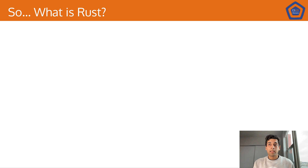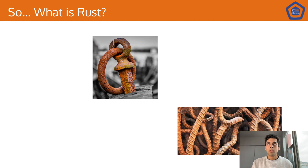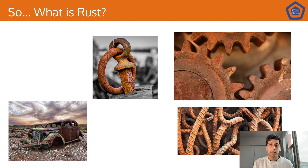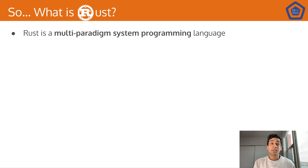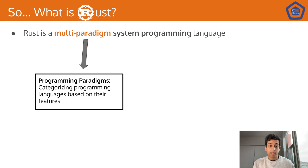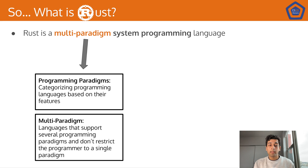So what is Rust the programming language? Rust is a multi-paradigm systems programming language. Let's break that down. When you hear multi-paradigm, this refers to programming paradigms — you've probably heard of these before. Programming paradigms categorize programming languages based on their features. Multi-paradigm means that a language supports several of these programming paradigms and doesn't restrict the programmer to a single paradigm. This can be object-oriented programming — you've seen this in Java, even Python. There's functional programming, there's imperative programming. In this class, we'll be teaching you Rust a bit through the lens of object-oriented programming and a little bit through functional programming towards the end.